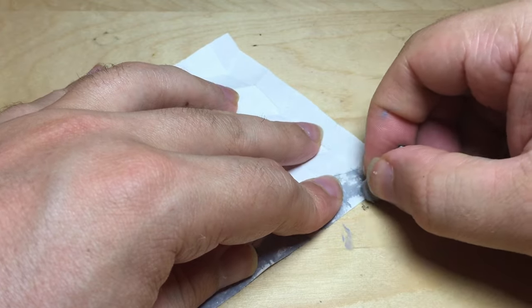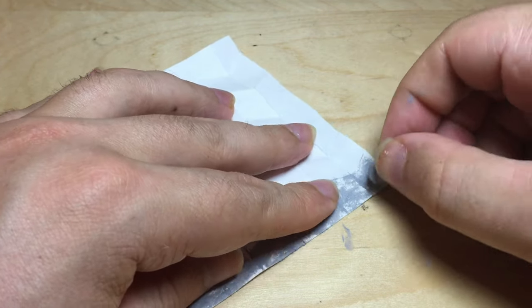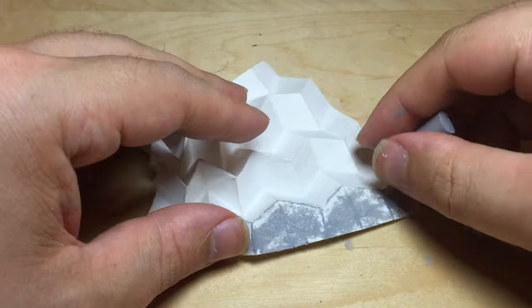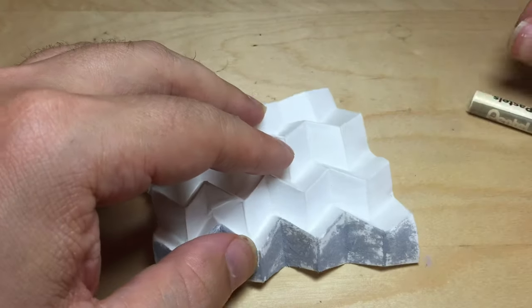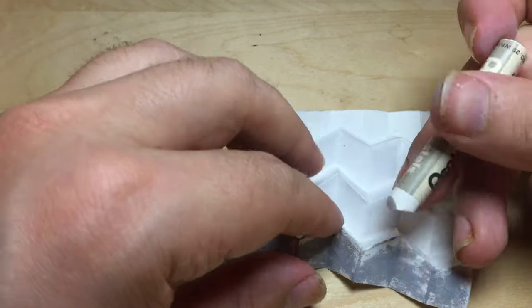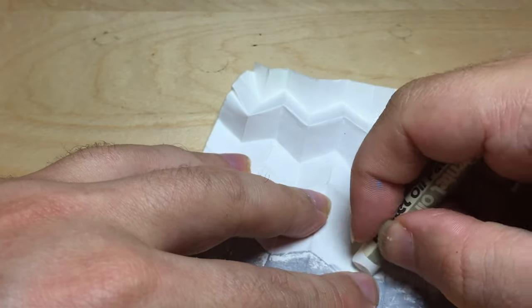The Miura map fold has a lot of variation in the height of the creases as the surface folds and unfolds. By coloring it you're showing details about the height.